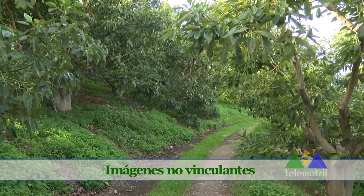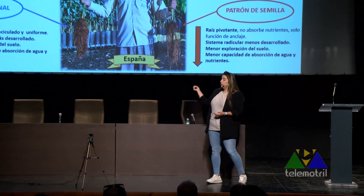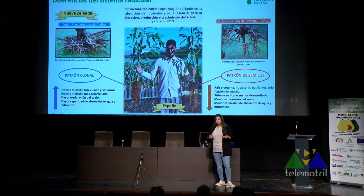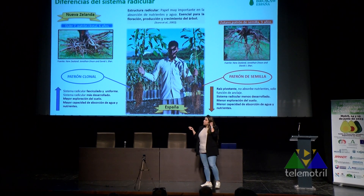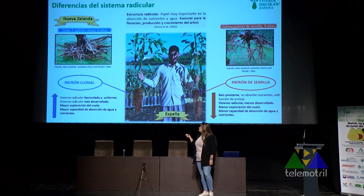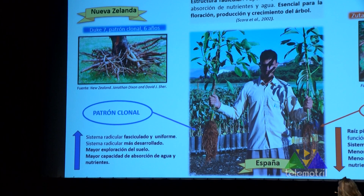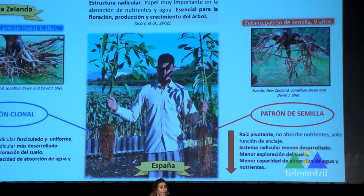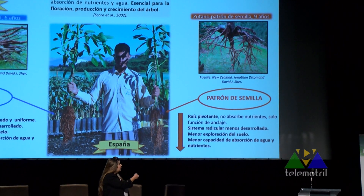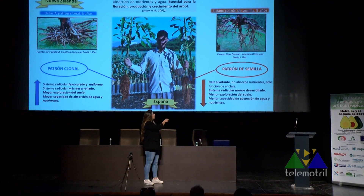Las diferencias entre árboles clonales y de semilla se ven desde el inicio. En un estudio de Nueva Zelanda podemos ver las raíces del sistema radicular de un Duque 7, un patrón clonal, de un árbol de 6 años: las raíces son muy fasciculadas y uniformes, con un sistema muy desarrollado que explora mucho el suelo y tiene mayor capacidad de absorción de nutrientes y agua. En cambio, un patrón de semilla Zutano de 9 años tiene una raíz principal pivotante que sirve principalmente de anclaje, con un sistema mucho menos desarrollado y fasciculado.